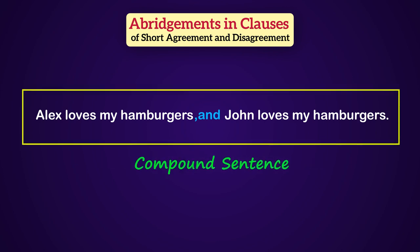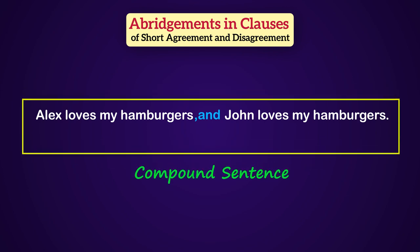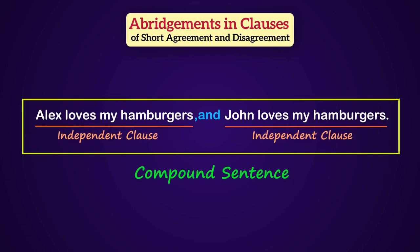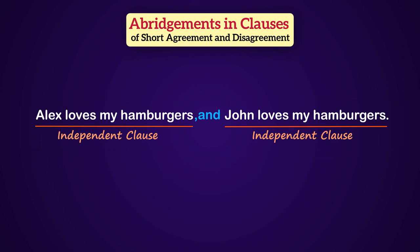Needless to say, a compound sentence is a kind of sentence which is made by two independent clauses. For those of you who might not know what independent clauses are, you can watch my video about phrases, clauses, and sentences on YouTube. I have shared the link in the description below. In this compound sentence, the second clause agrees with the first clause.